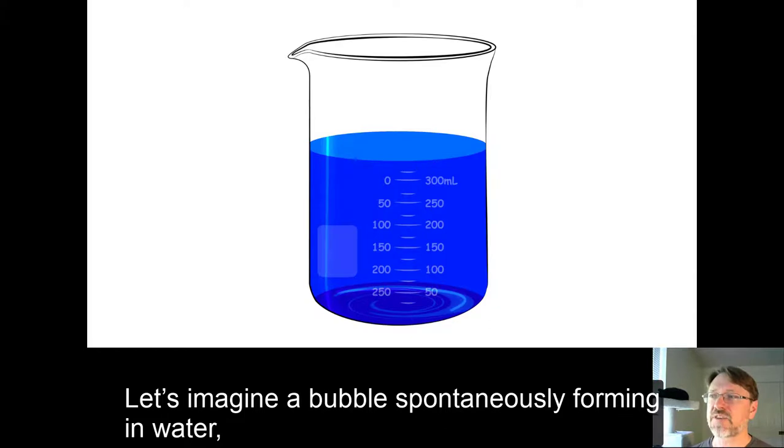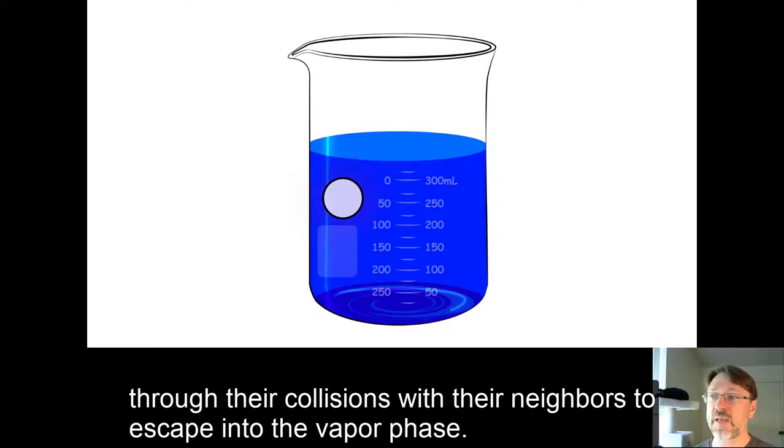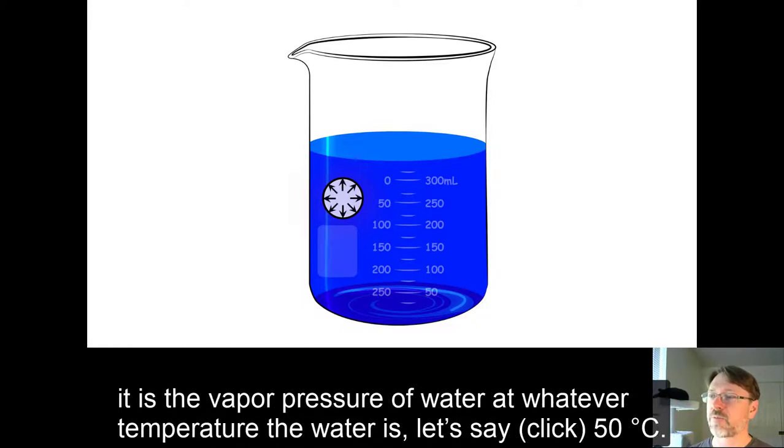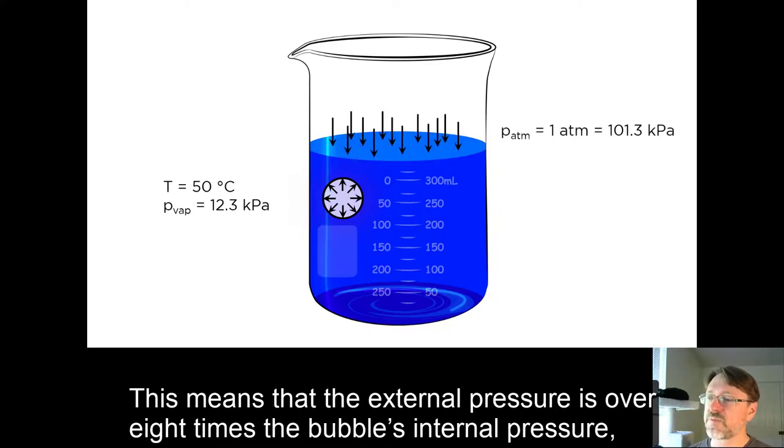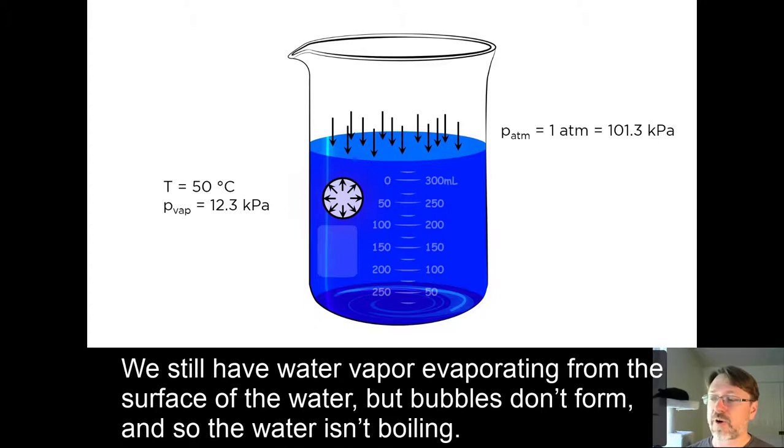Let's imagine a bubble spontaneously forming in water because some neighboring molecules all got enough kinetic energy through their collisions with their neighbors to escape into the vapor phase. This bubble is filled only with water vapor, so we know the pressure inside the bubble. It's the vapor pressure of water at whatever temperature the water is, let's say 50°C. But we also know the outside pressure of the atmosphere. This means that the external pressure is over 8 times the bubble's internal pressure, and so the bubble very simply collapses before it can even get started.